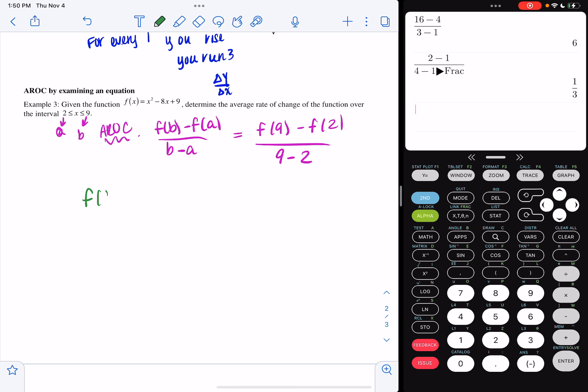So what I'm going to do is I'm going to go to the side of my paper and write down f of 9. So everywhere I see an x, I'm going to substitute 9. So I have 9 squared minus 8 times 9 plus 9, and that gives me 18. Now I'm going to find f of 2. So I'm going to do 2 squared minus 8 times 2 plus 9, and that's going to give me negative 3.